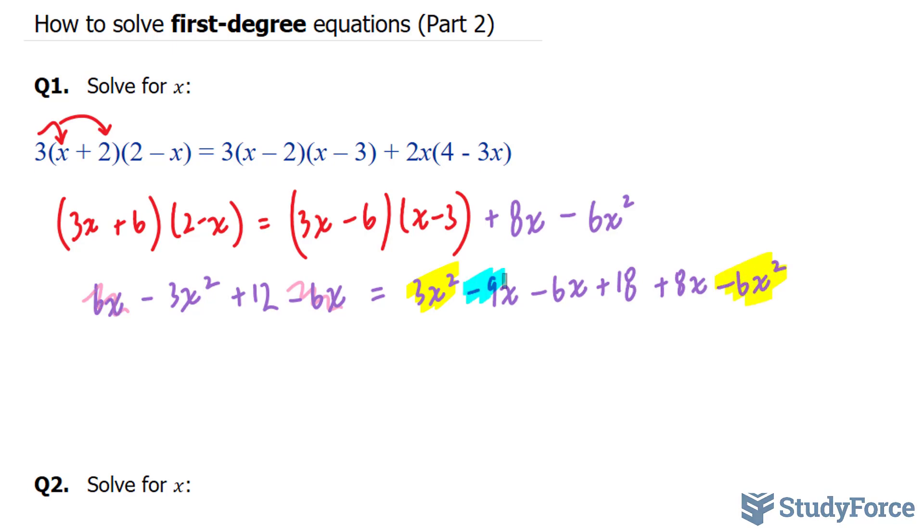This term right here is alike with that one. This term is alike with this one and this one, and the 18 stays the way it is.